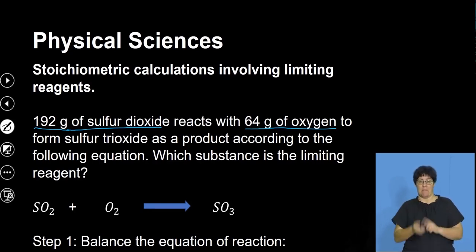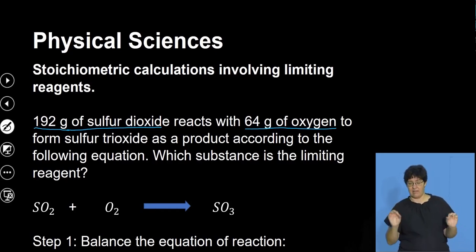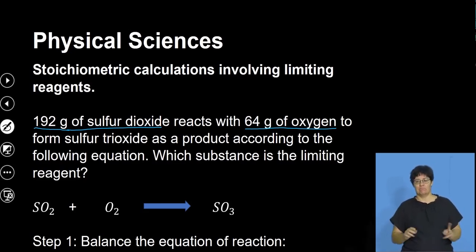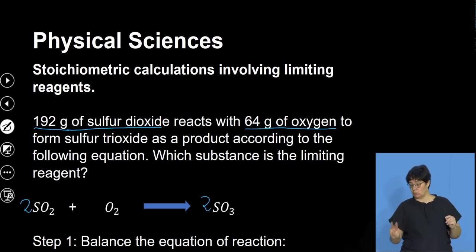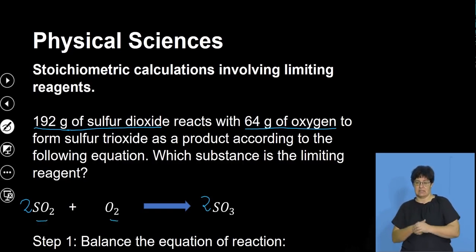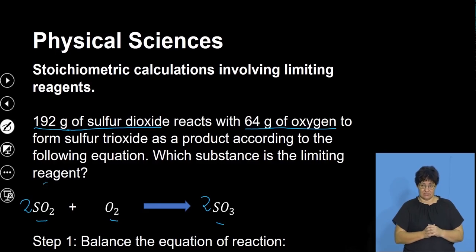There is one sulfur on the left and one on the right. The problem comes with oxygen — we've got four oxygen on the left and three on the right. So if we put a two in front of SO₂ and a two in front of SO₃, sulfur is balanced, and oxygen gives us six: the four plus two. So the stoichiometric ratio in which they react is 2:1:2.